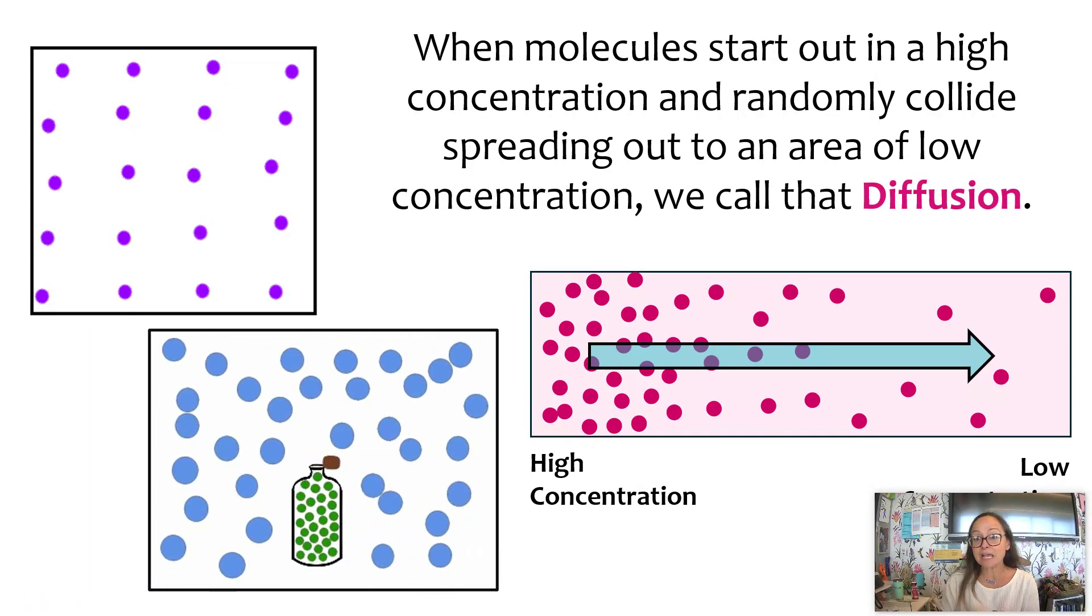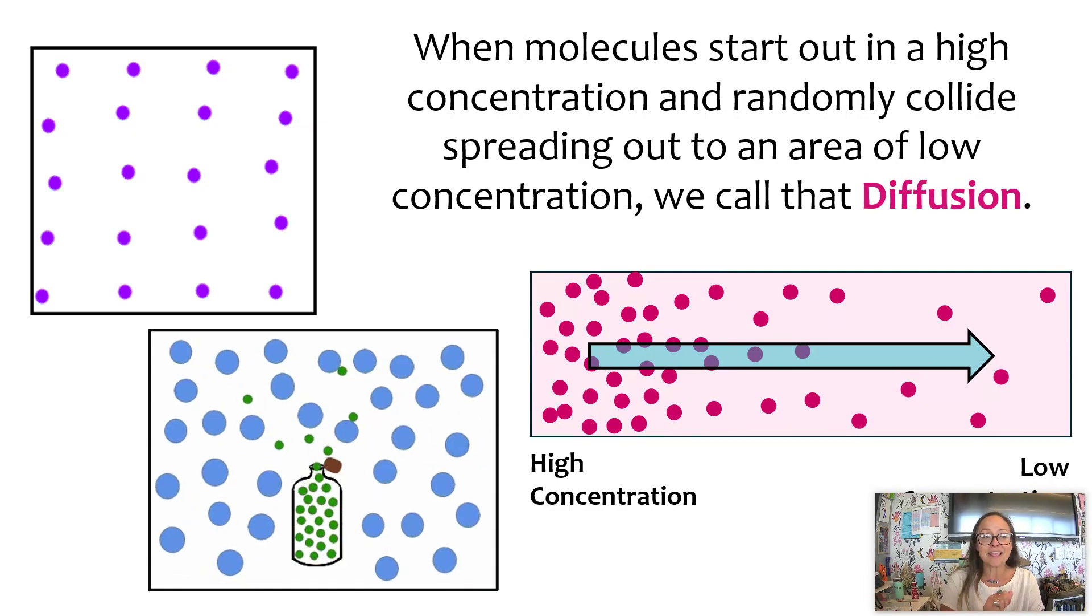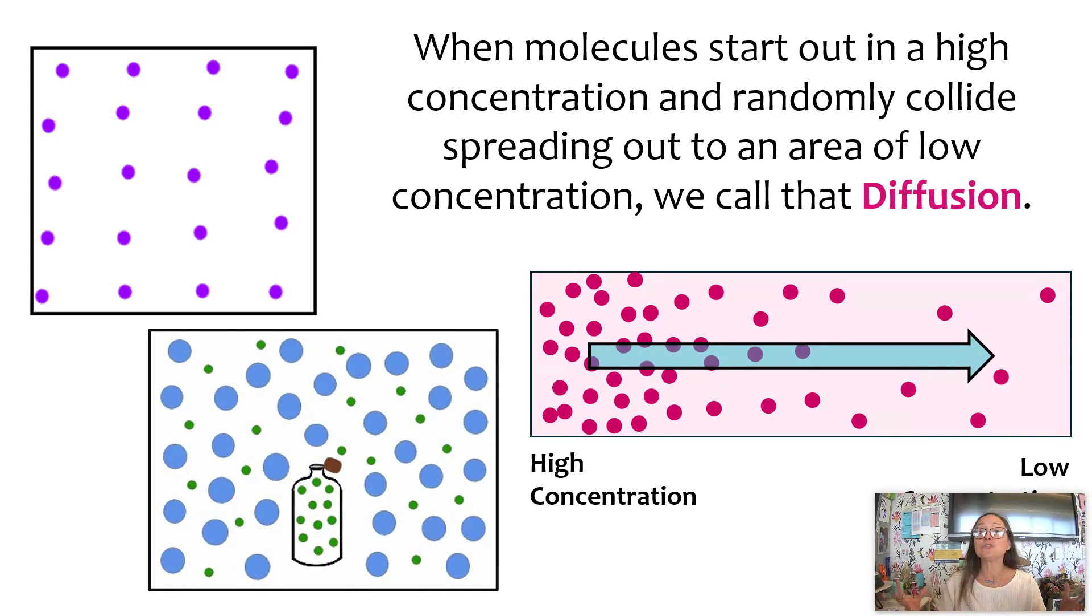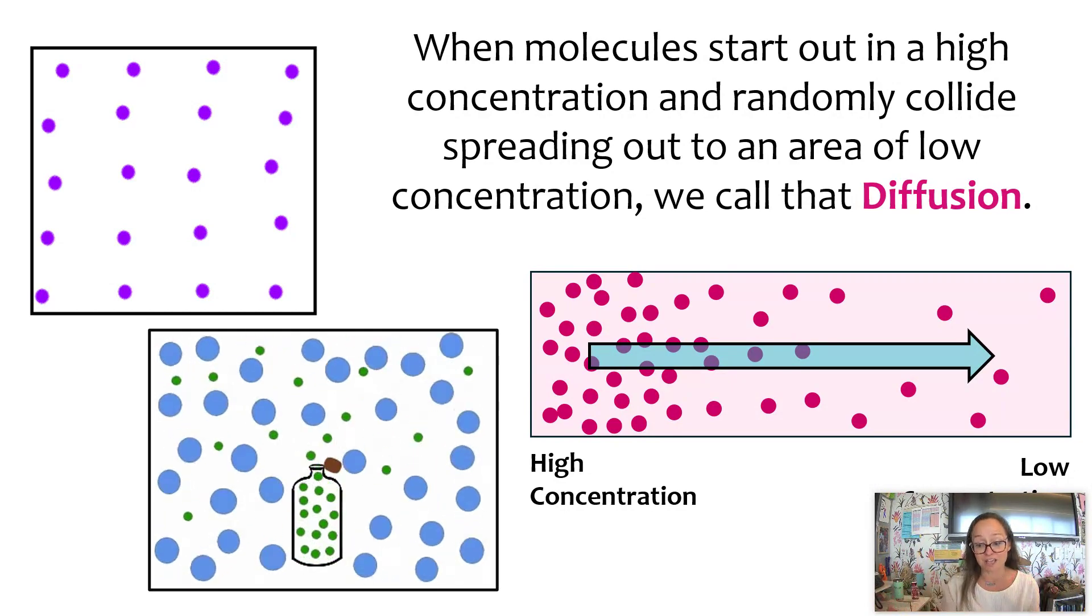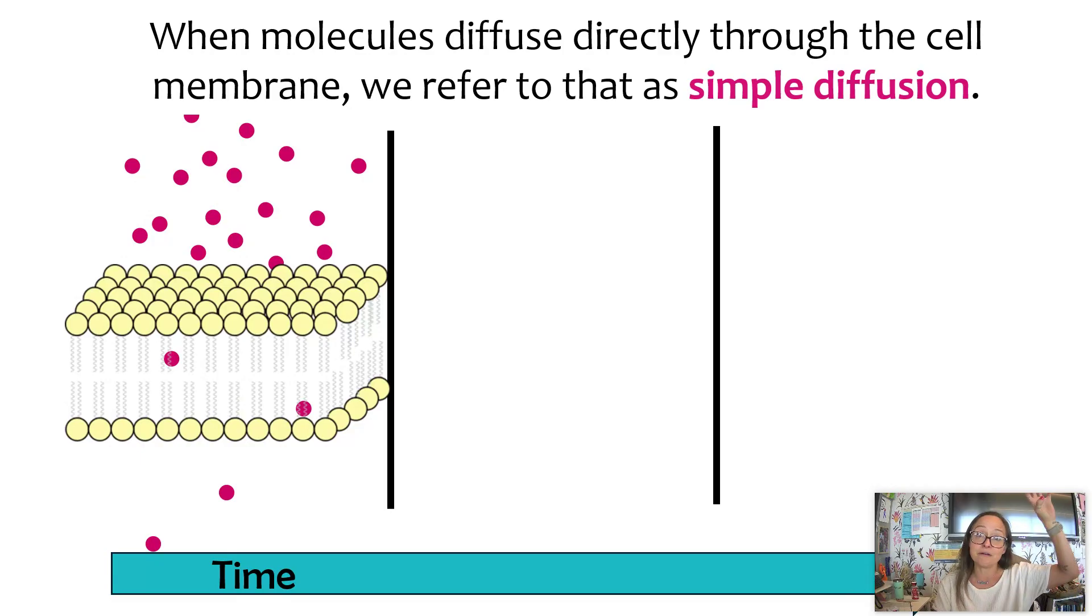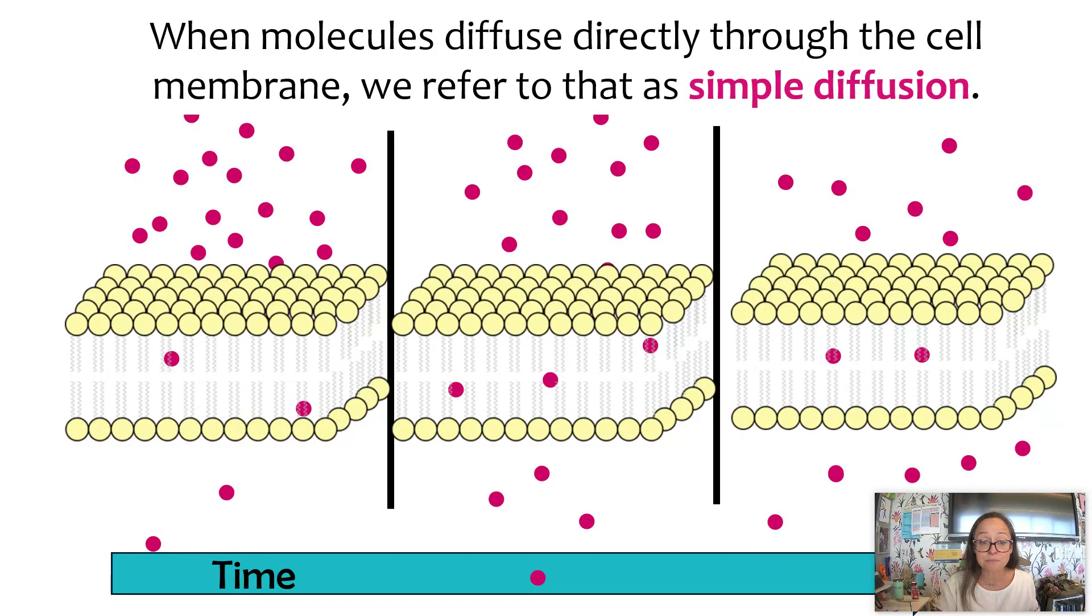Now I also want to point out that sometimes when I read student answers about diffusion, a lot of times they'll use phrasing like, oh, they need to move or they want to move. No, they don't have feelings and desires and hopes and dreams. These are due to random collisions bouncing into each other. So if we look at this here, we can see in the cell on the left, or the cell membrane, we have a high concentration on the outside of the cell or above the cell membrane. And then through random collisions, some of those molecules are going to be able to pass right on through that membrane. Now if you go back to our previous video on permeability, we know that these types of molecules are going to be small, nonpolar molecules that are able to diffuse right on through those fatty acid tails.